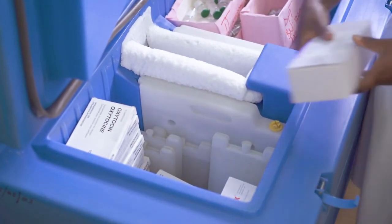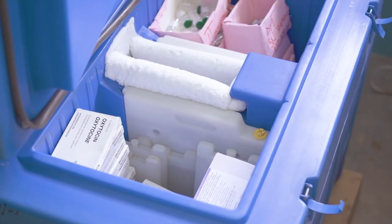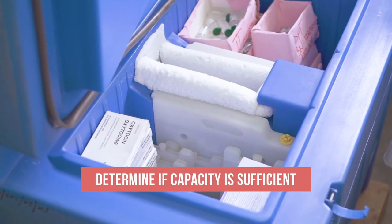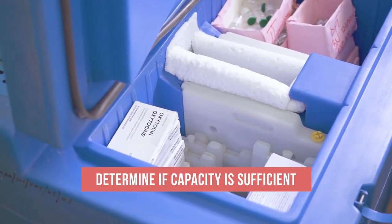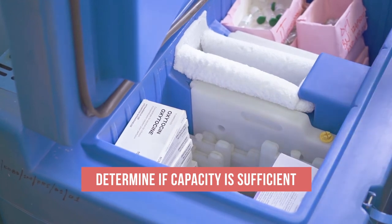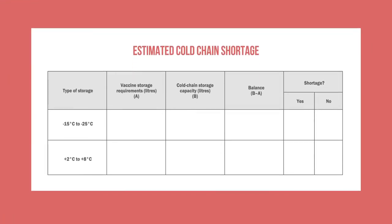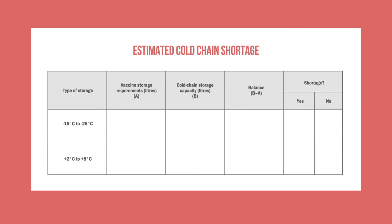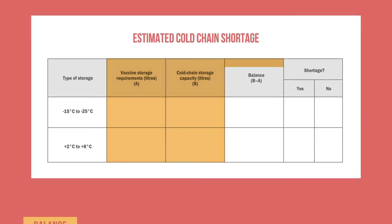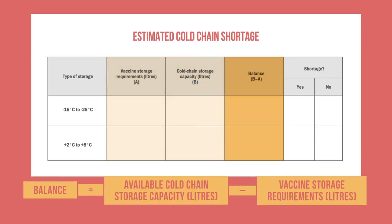Once you know your cold chain storage capacity and vaccine storage requirements, you can determine if you have sufficient cold chain capacity to store the vaccines. A table like this can help. List your vaccine storage requirements and available cold chain storage capacity for both temperature ranges. For each type of storage, subtract the required storage from your available capacity. If the result is a negative number, you have a shortage issue that will need to be addressed.